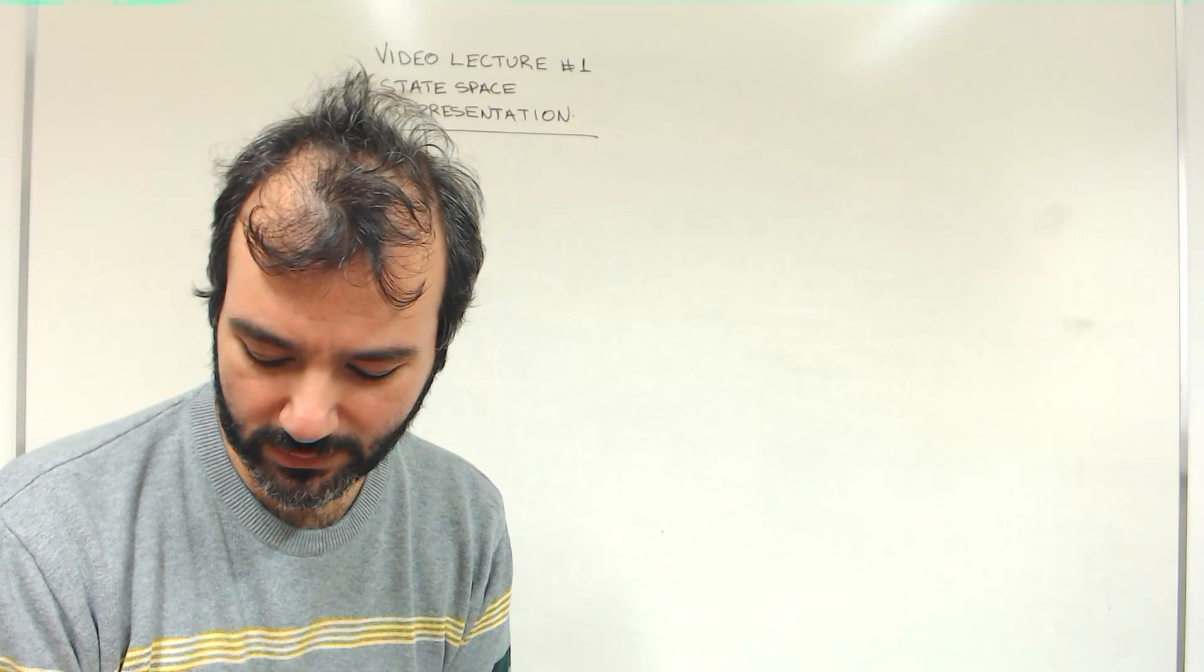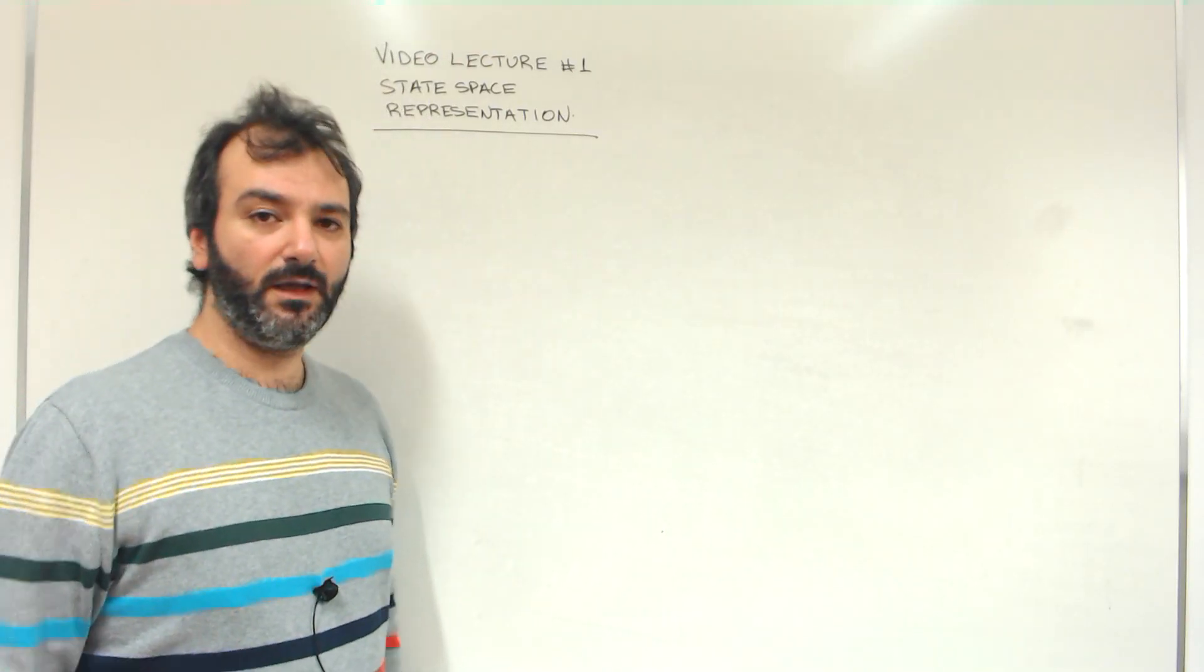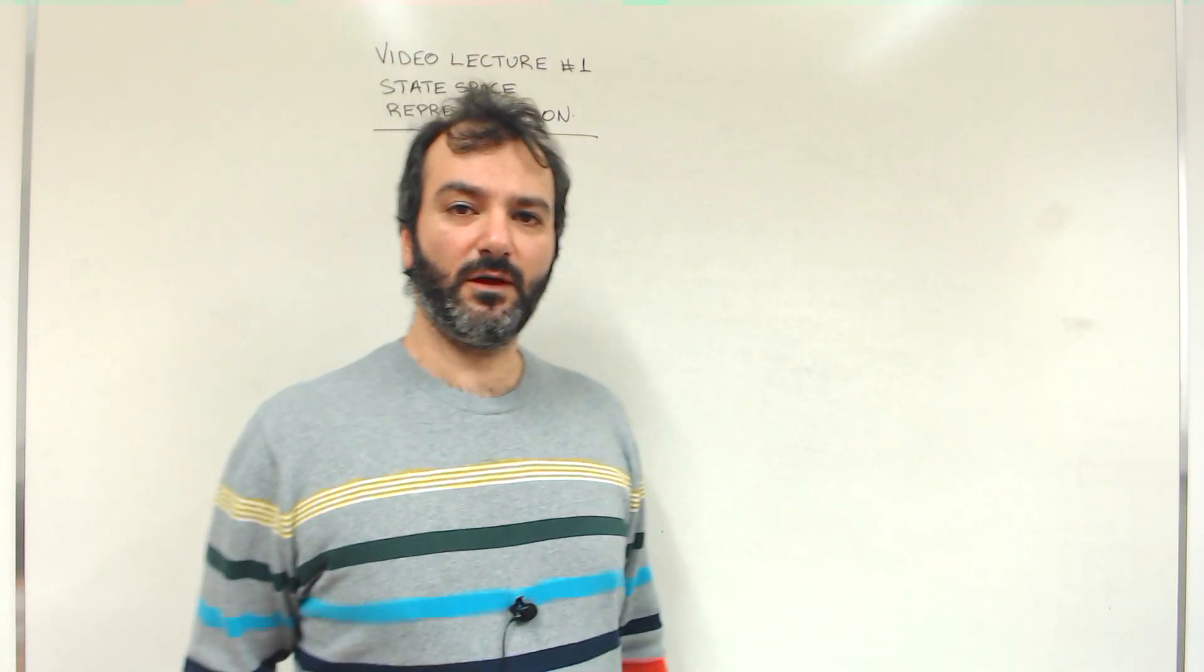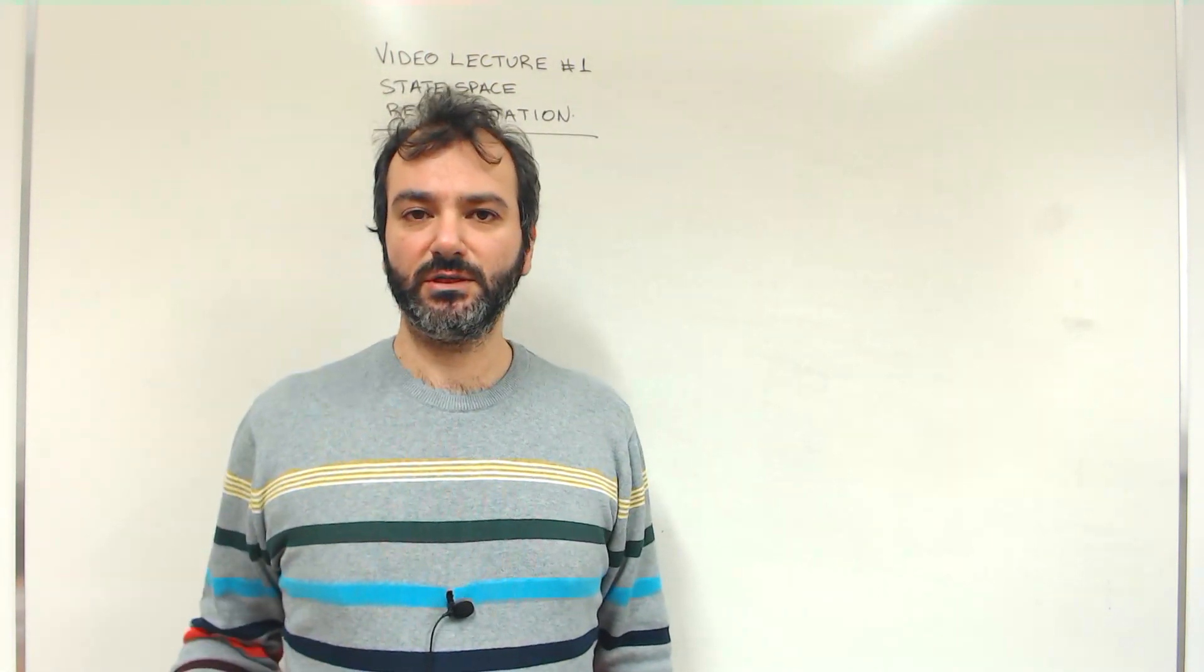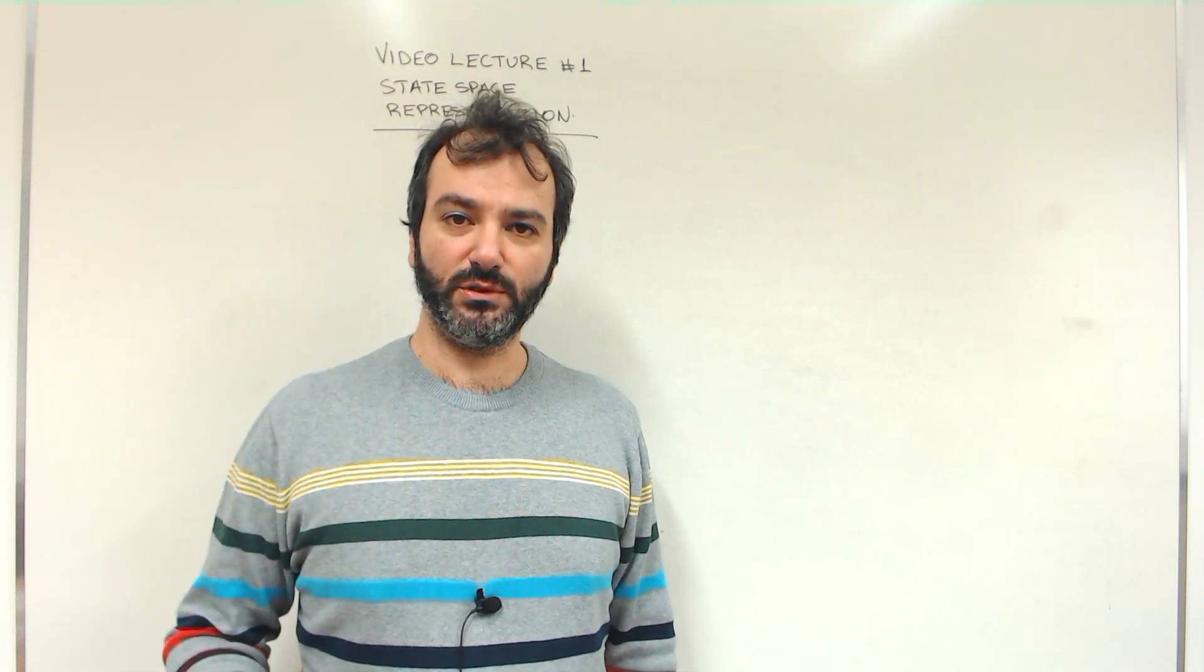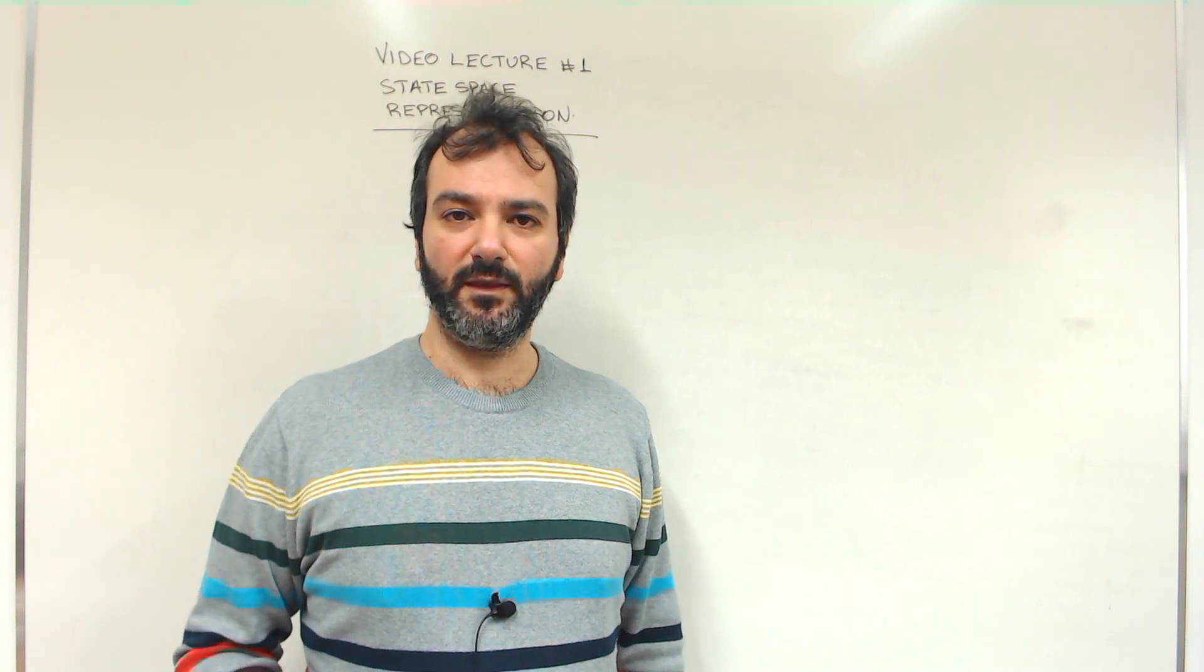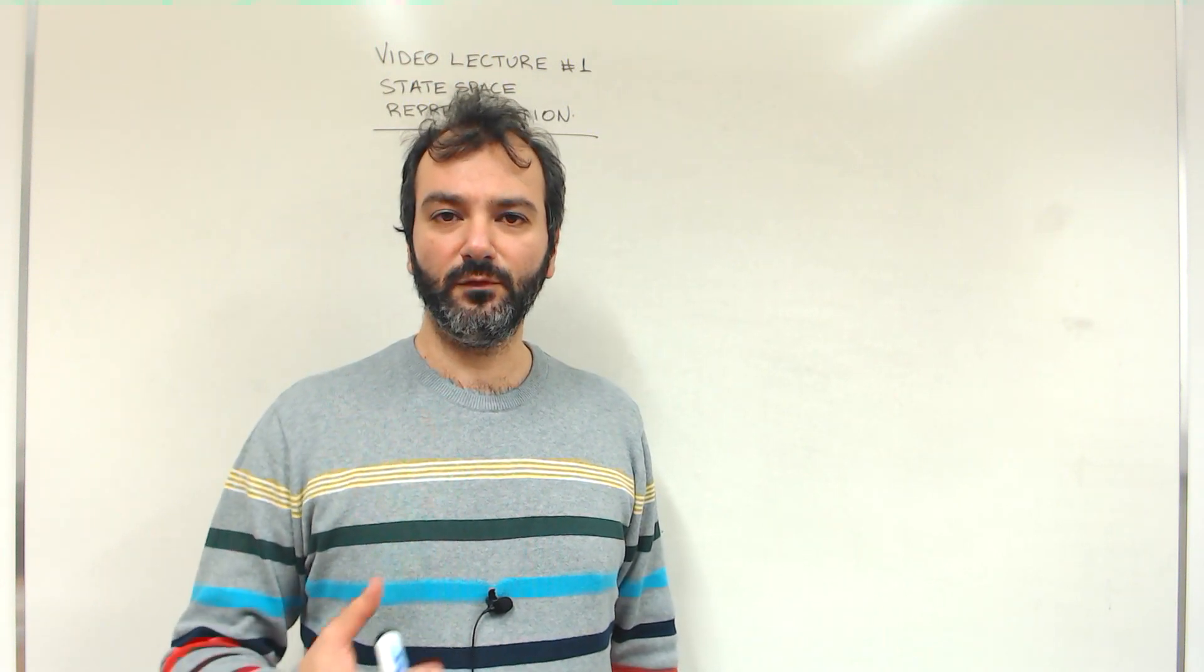Welcome to this first video lecture on dynamical systems and the state space representation. Everything around us changes: the temperature, the weather, the pressure, the humidity, the position of a car on the motorway, the position of a robot, or the temperature inside a chemical reactor. These are systems that evolve in time.